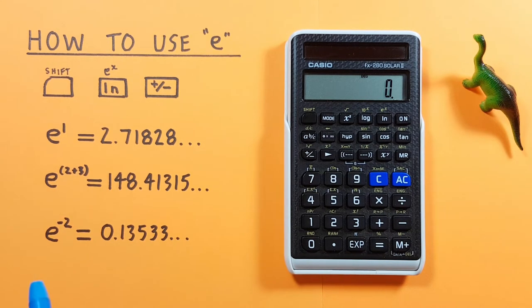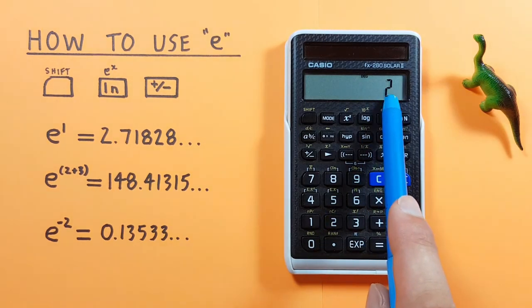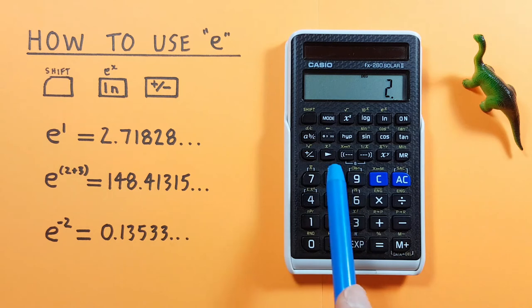We can also find negative exponents, like for example e to the power of negative 2. To do this, again, we start by placing our exponent on the screen, which in this case is negative 2. So we press 2, and then we want to tell our calculator this is a negative, so we use the positive negative key right here.